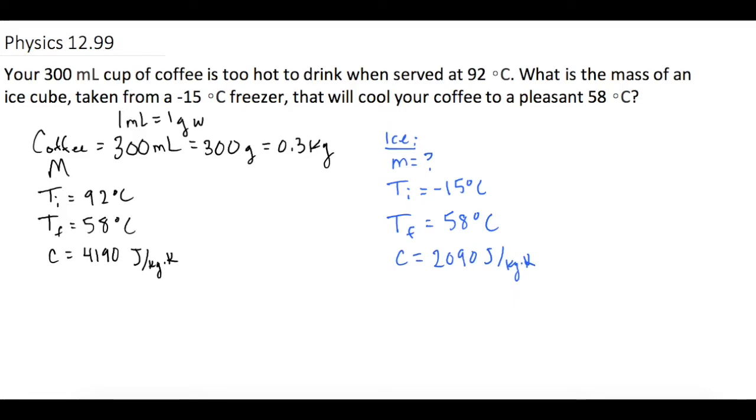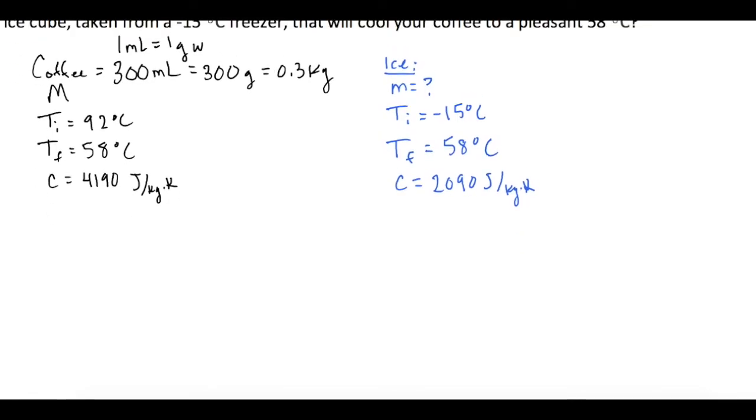So now we're going to be using one of the charts we've had in the past questions. Let's draw it real quick. So we're going to have this phase change chart. So the ice cube is down here at negative 15 degrees Celsius.